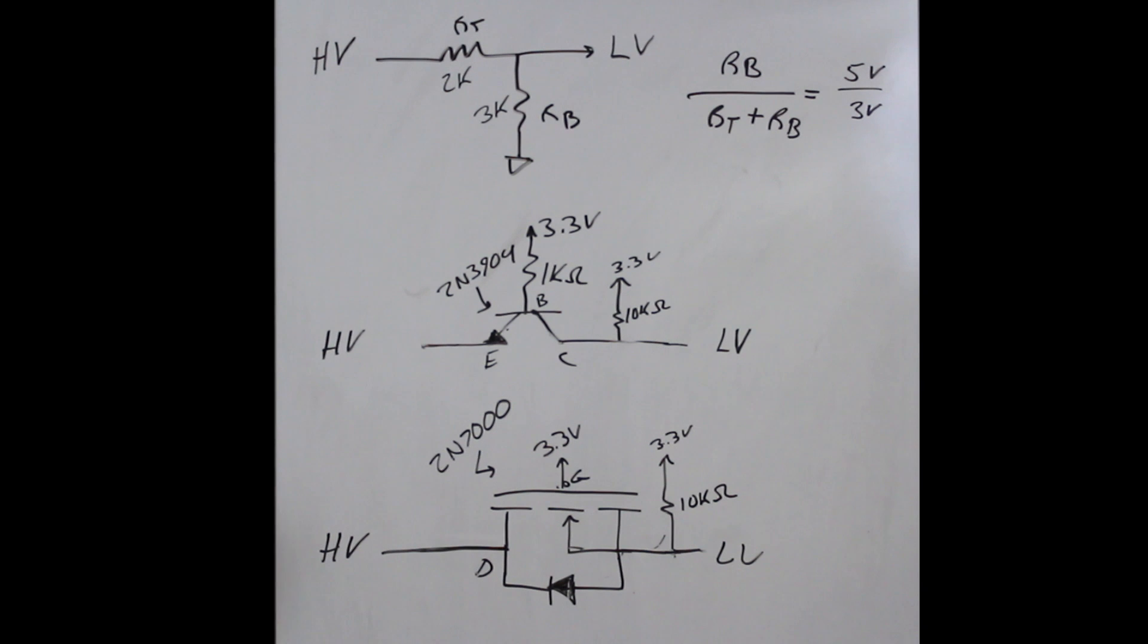This is the simplest method, but it's also the weakest because it is very slow. I'll show you that on the scope where maybe if you're shifting down a really slow serial signal with a slow baud rate, this method might work for you.